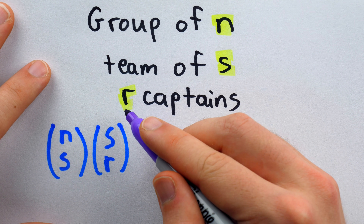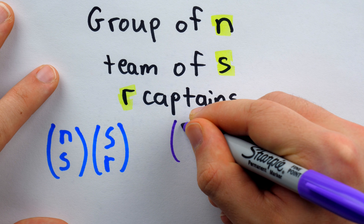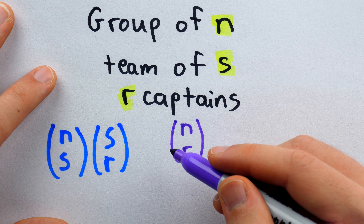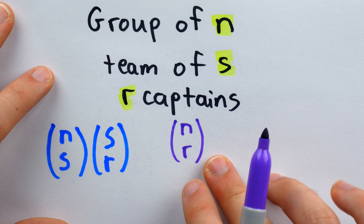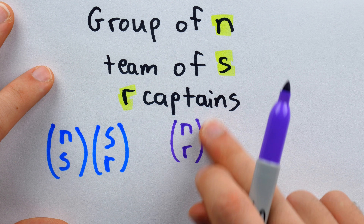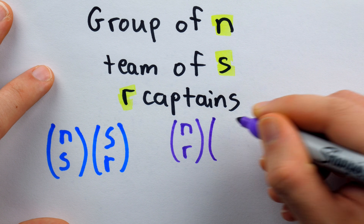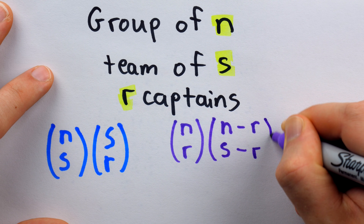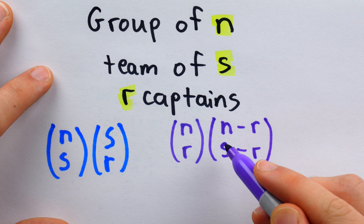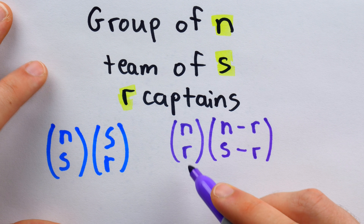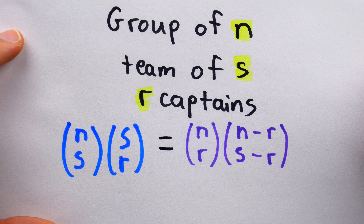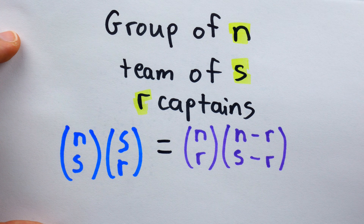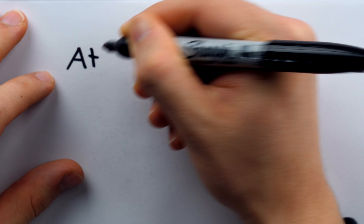Another way would be to pick out the r captains first. Then we would have n choose r ways to pick r captains from the n total people available. For every way we pick r captains, there are n minus r people left to choose from, and we need to pick s minus r more people to fill out the team. So that gives us (n choose r) times (n-r choose s-r). As a result, these two expressions must be equal because they both count the number of ways to pick a team of size s with r captains from a group of n people.